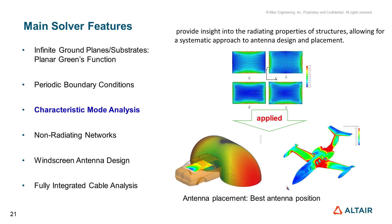Characteristic mode analysis provides an insight into the radiating properties of structures, allowing for a systematic approach to antenna design and placement. It can be applicable for antenna placement to find the best antenna position on large platforms such as vehicles or airplanes.